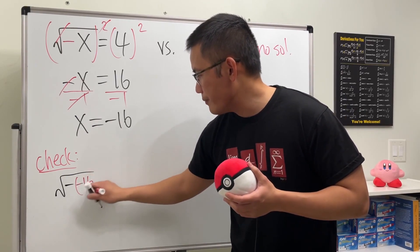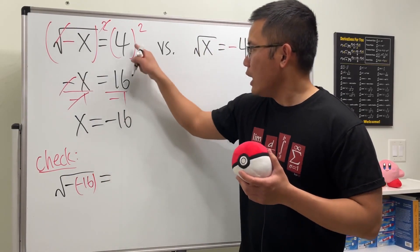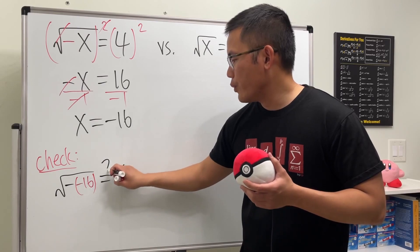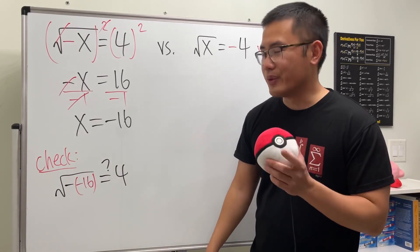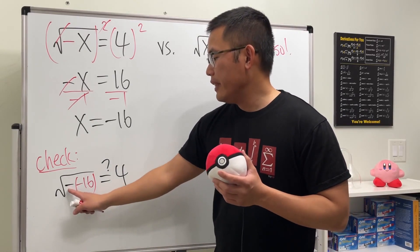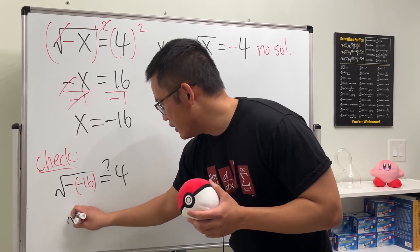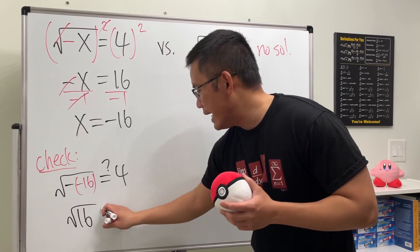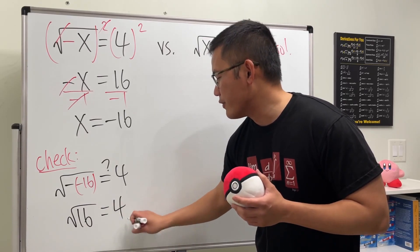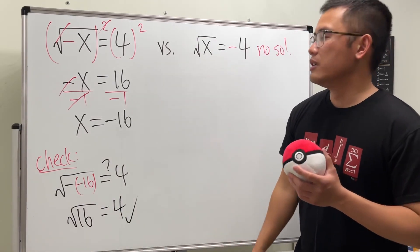Do we end up with 4? We do, because if you look at the inside here, negative times negative gives us positive, so this right here does give us square root of 16 and it does give us the number 4, so it does check. This right here is indeed the answer.